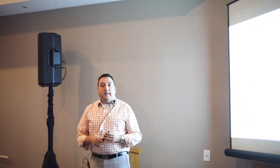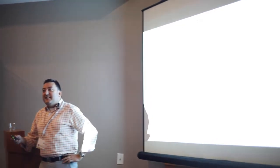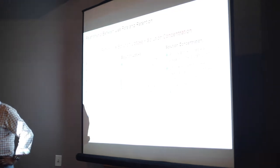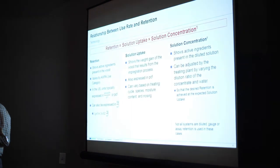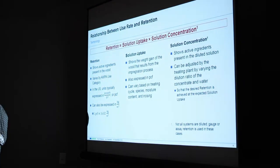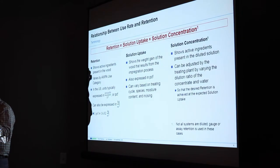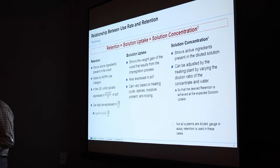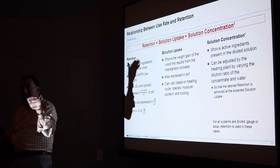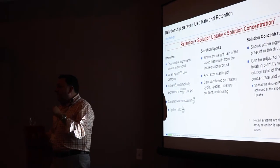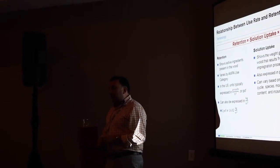Back on the calculation: retention equals solution uptake times concentration. Retention is the amount of chemical absorbed by the wood, usually defined in an assay zone showing the active ingredients present. In the U.S., units are typically PCF — pounds per cubic foot — which is pounds of chemical divided by cubic feet of wood volume. It can also be expressed in kilograms per cubic meter; the conversion factor is about 16.